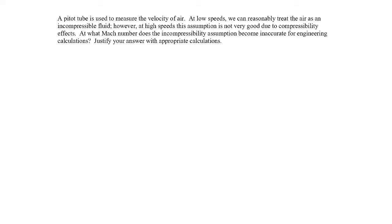In this example, we're told we have a pitot tube, which is used to measure the speed of air. At low speeds, we can reasonably treat the air as being an incompressible fluid. However, at high speeds, this assumption is not very good due to compressibility effects. We're asked to find at what Mach number does the incompressibility assumption become inaccurate and justify our answer with appropriate calculations.